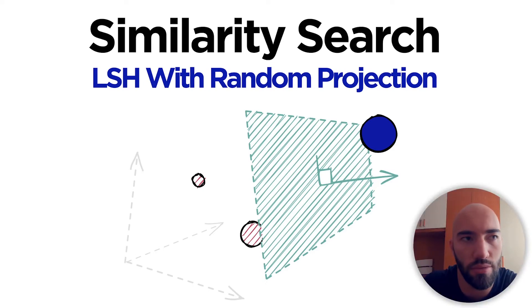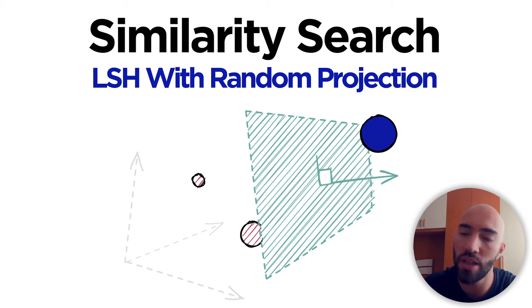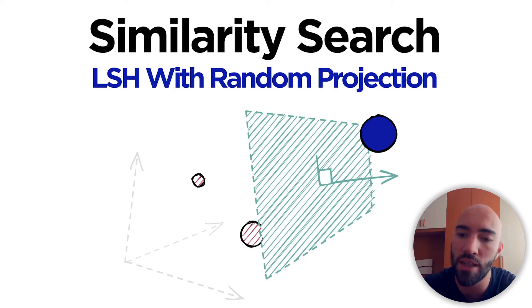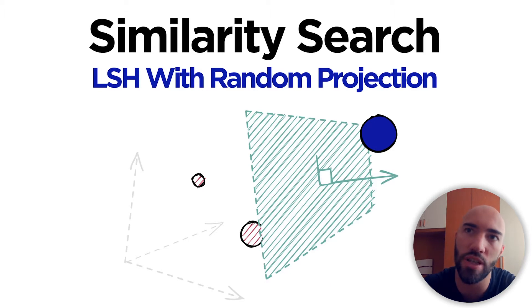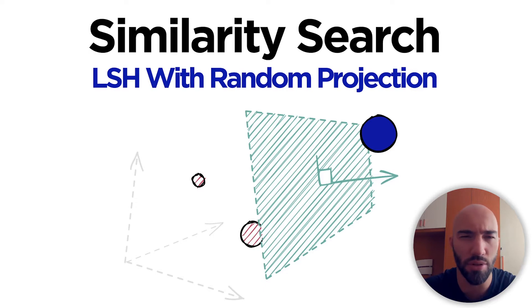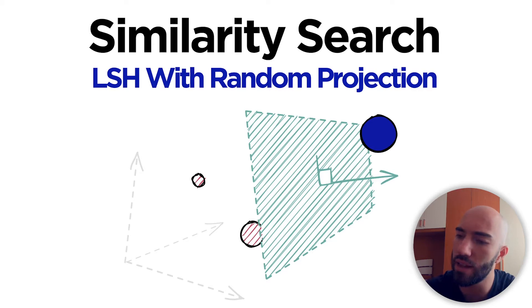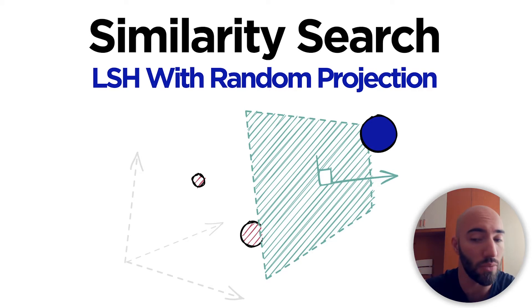We're covering LSH, or locality sensitive hashing, with random projection. In a previous video in this series we covered LSH in the more traditional version with shingling, min hashing and LSH. What we're covering here is more of a modern implementation, and this is what you'll see in libraries like FAISS, which we'll work through later.